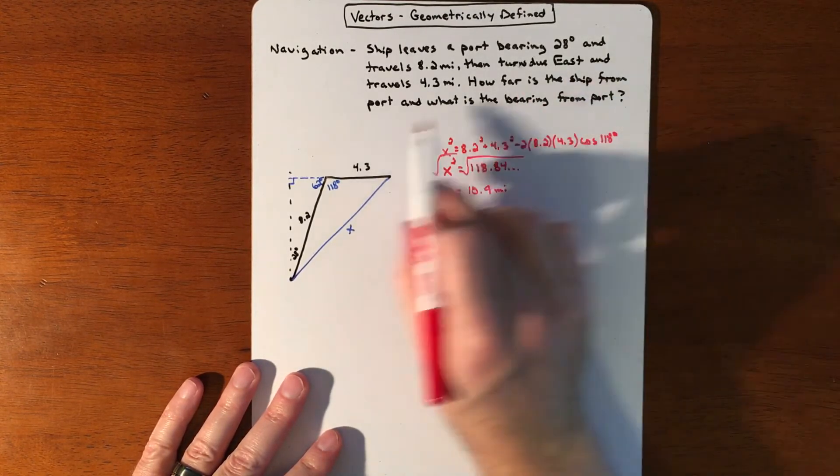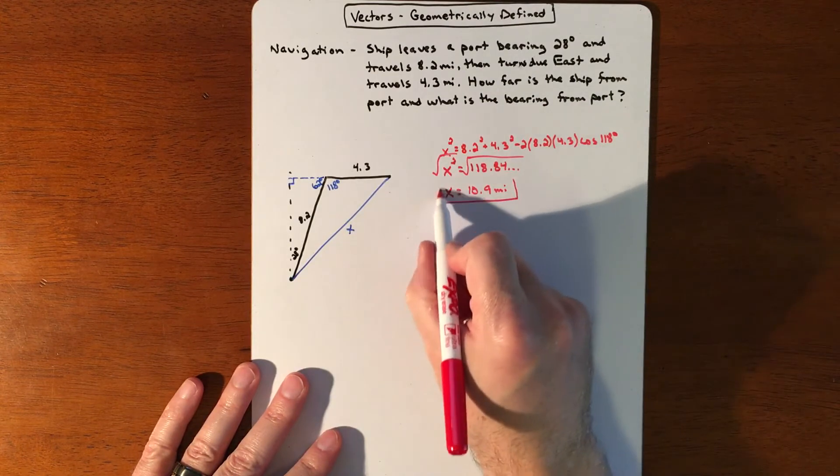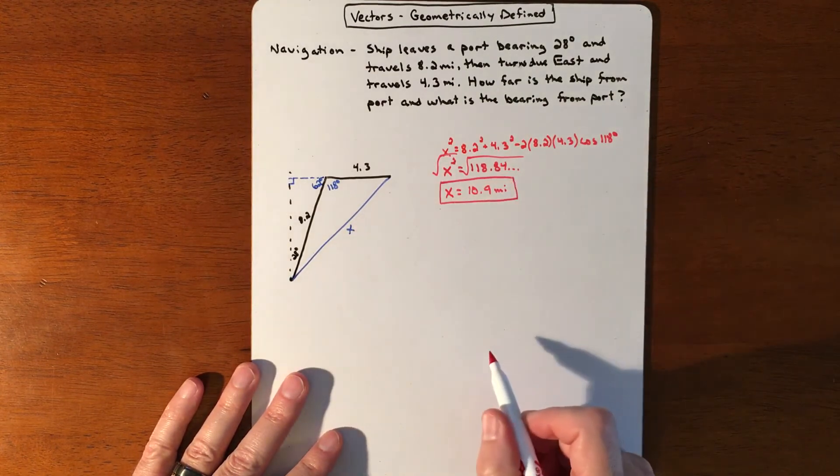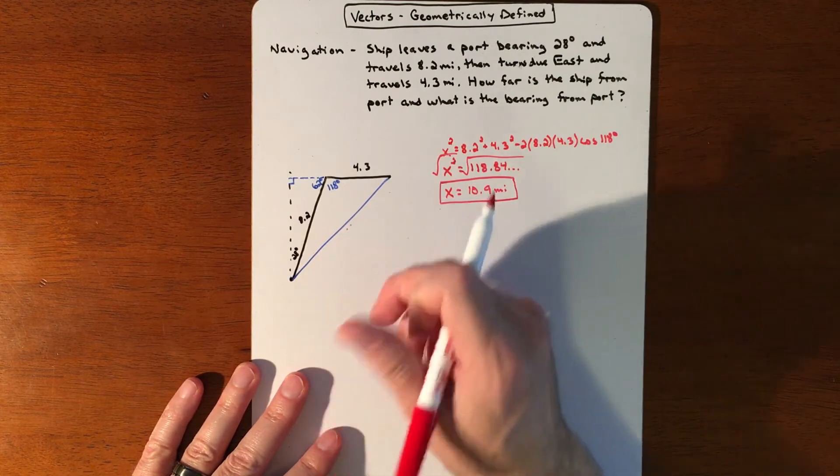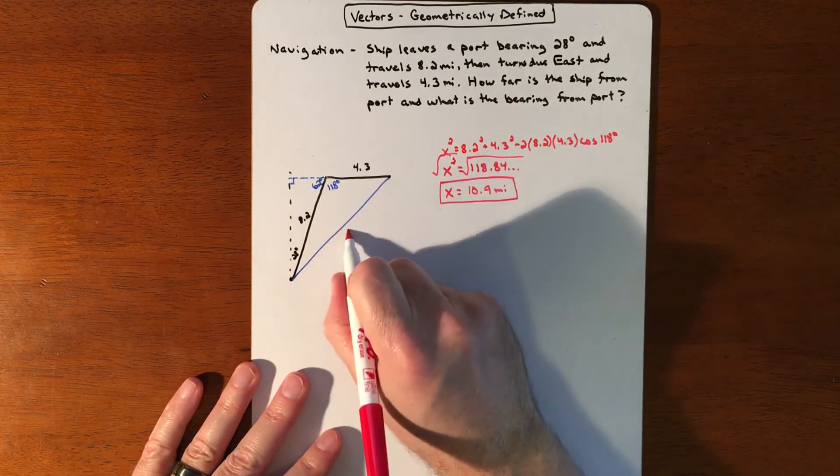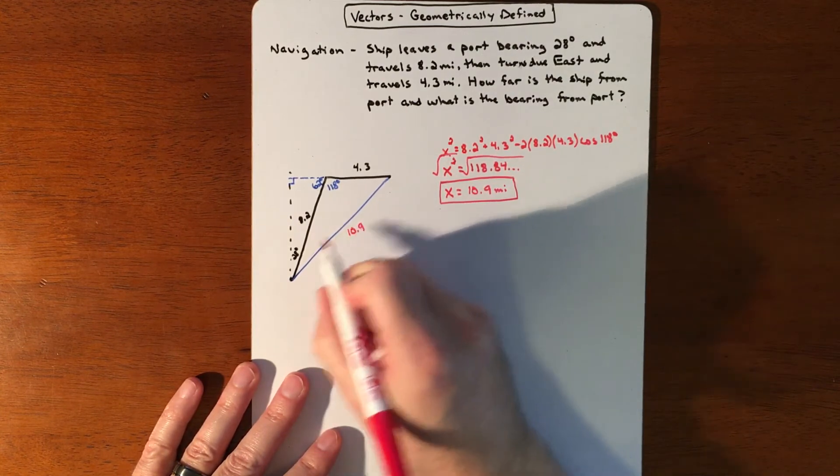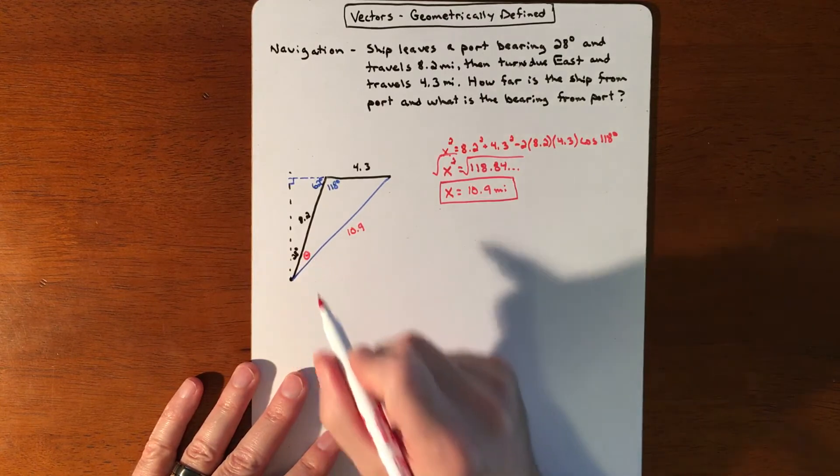So it says, how far is the ship from port? It's about 10.9 miles from the port. So I'm going to get rid of that and actually throw the answer in there because what we're also looking for is that angle right there.